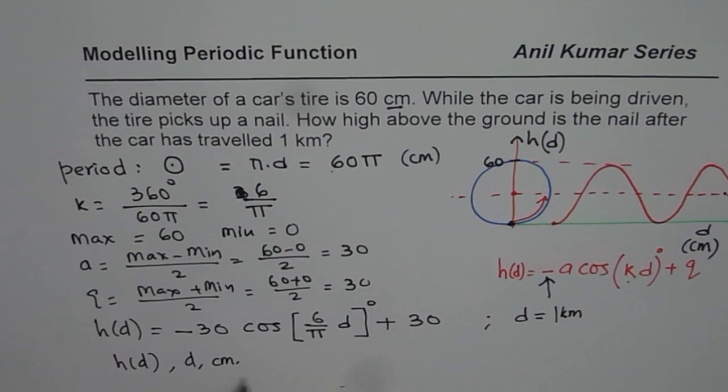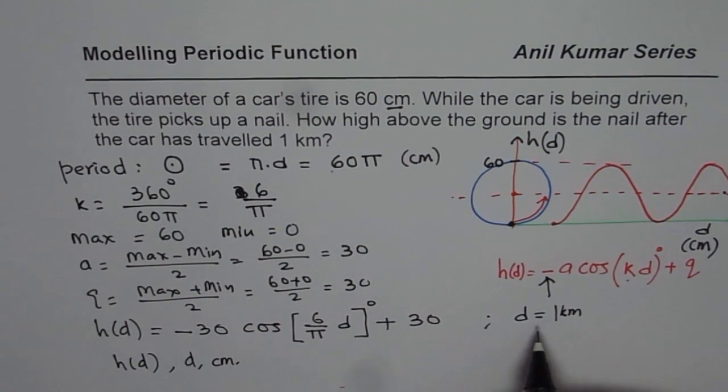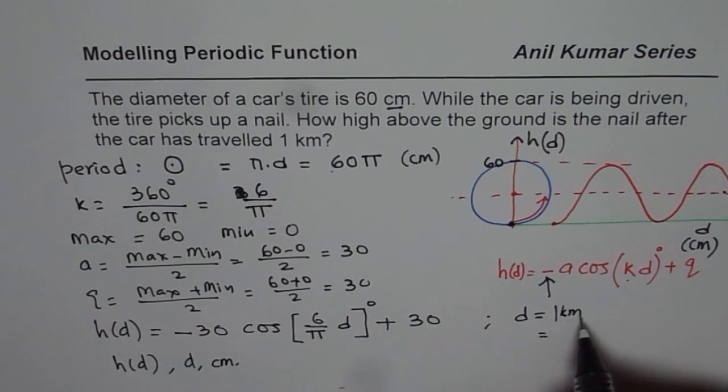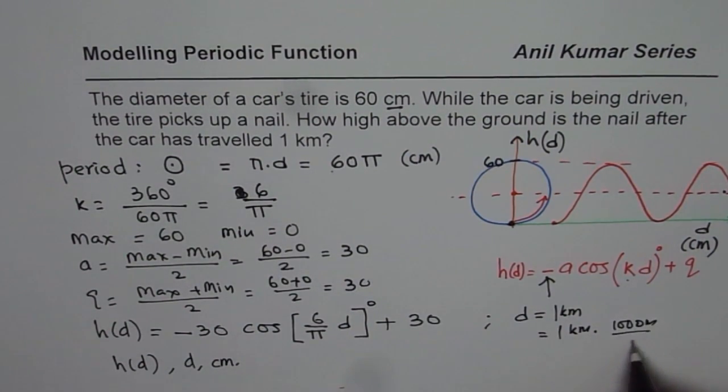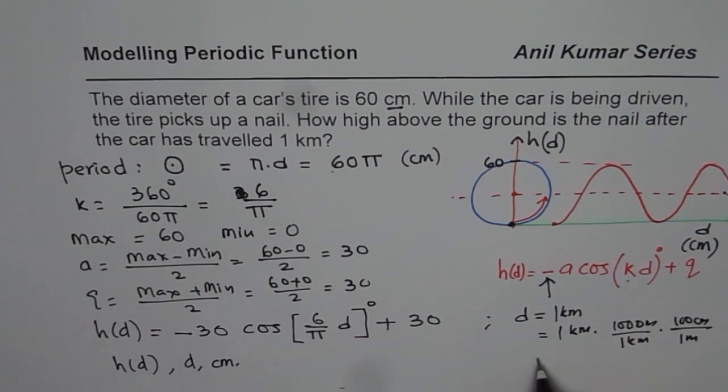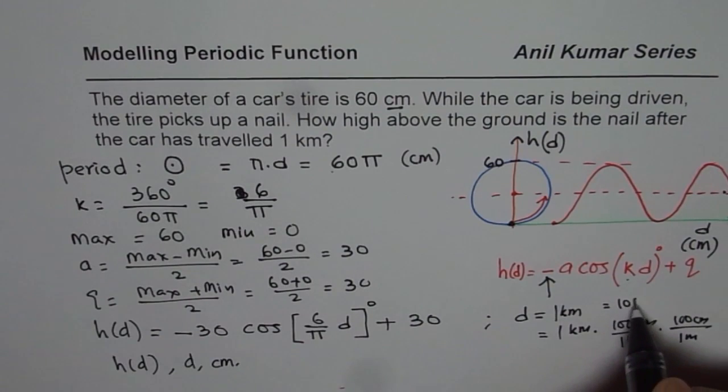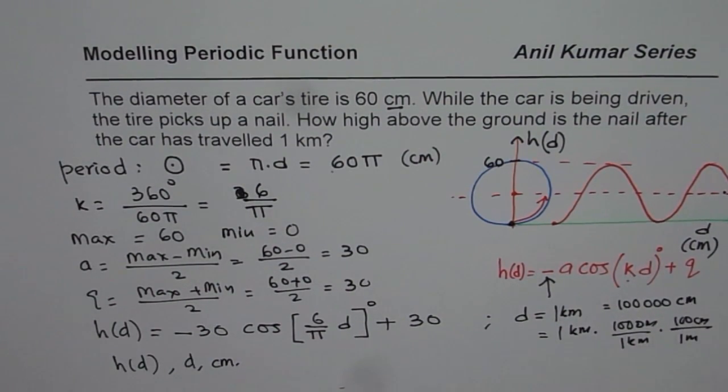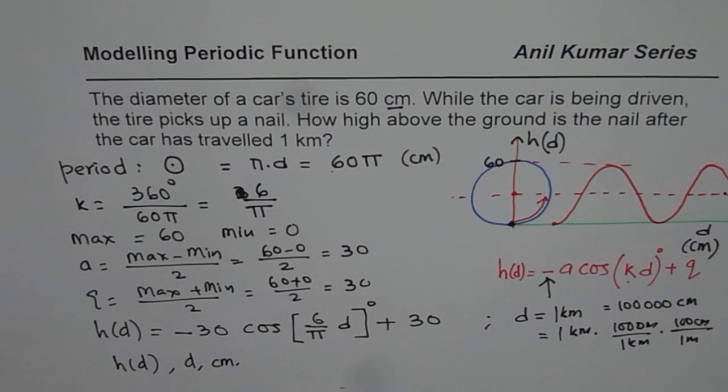So height h(d) and d both are in centimeters. Therefore, you convert this kilometers to centimeters. That means 1000. So when you say 1 kilometer, you can always say that 1000 meters is 1 kilometer. We want centimeters, not even meters. So we say 100 centimeters equals to 1 meter. That means we are looking for d as 100,000 centimeters. You can always place this value, find your answer and write it down.